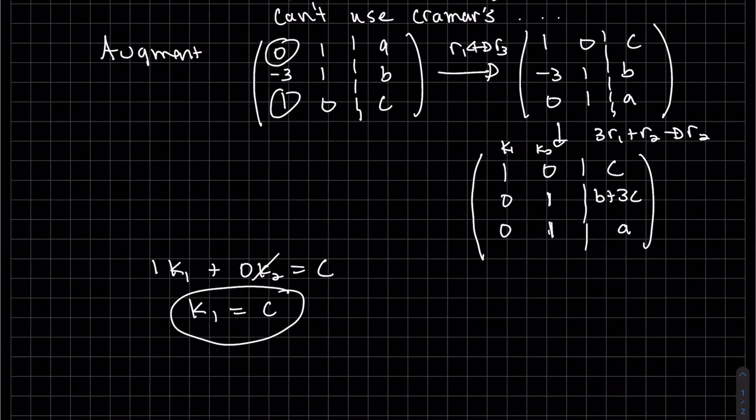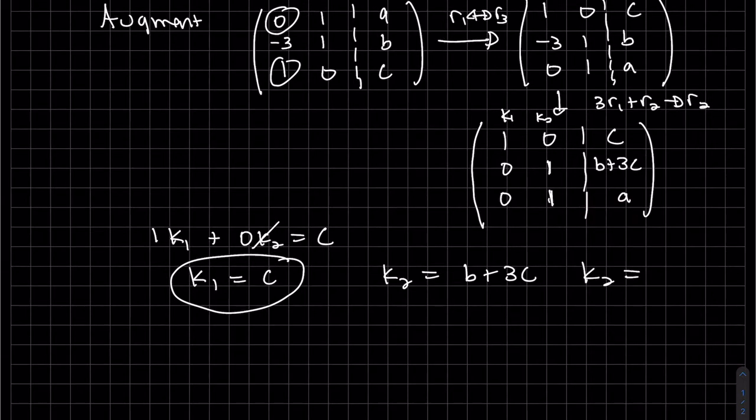The second one is k2 equals b plus 3c, and our last one is k2 equals a. Oh, we found both of them.